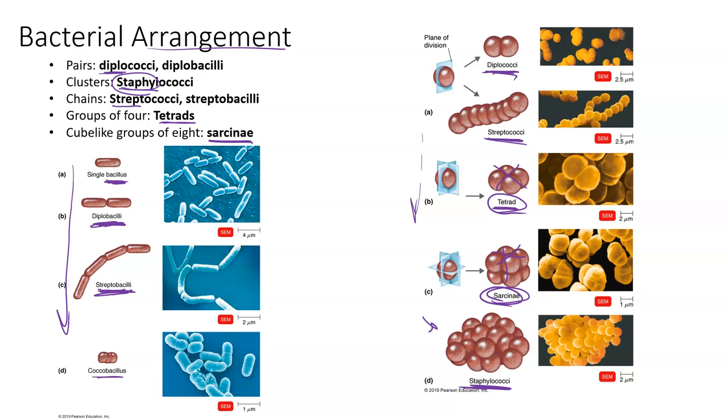You also have strep throat bacteria, which would be Streptococcus pyogenes. That would resemble this particular bacteria. So if you had strep throat, if you went to the doctor and they cultured the bacteria that were on your tonsils or in your throat, they would actually see that the bacteria responsible for causing strep throat would be a streptococci. That is a chain of spherical bacteria.